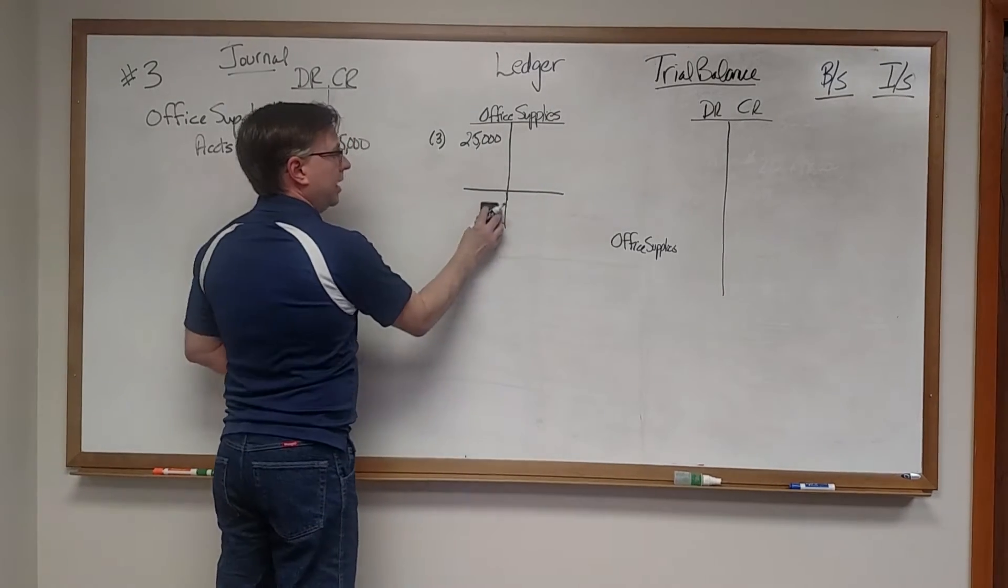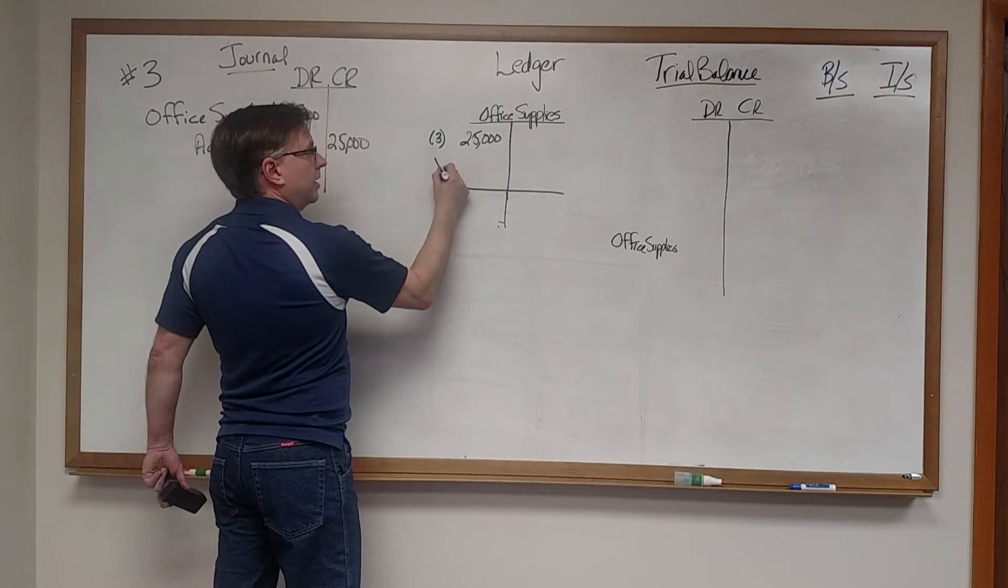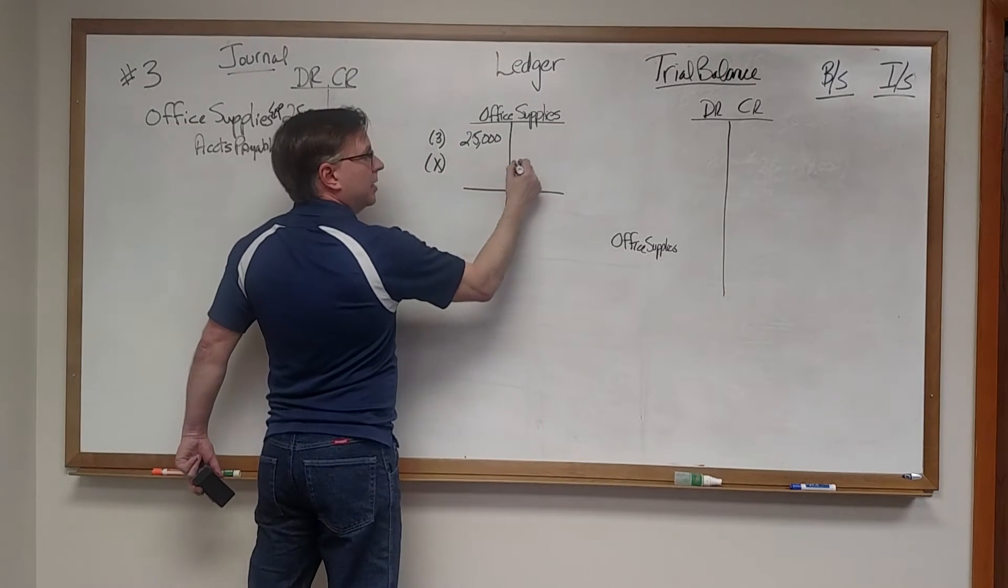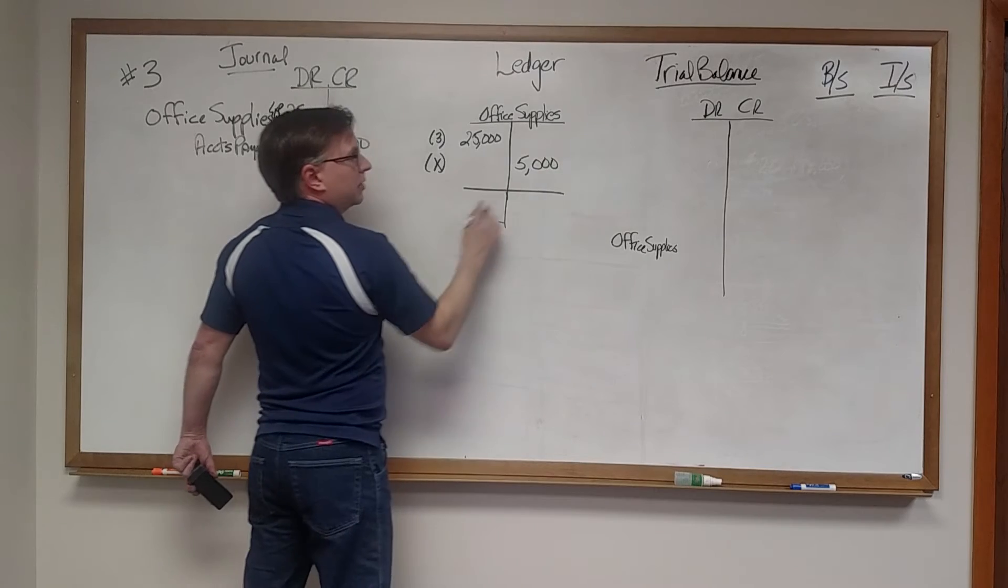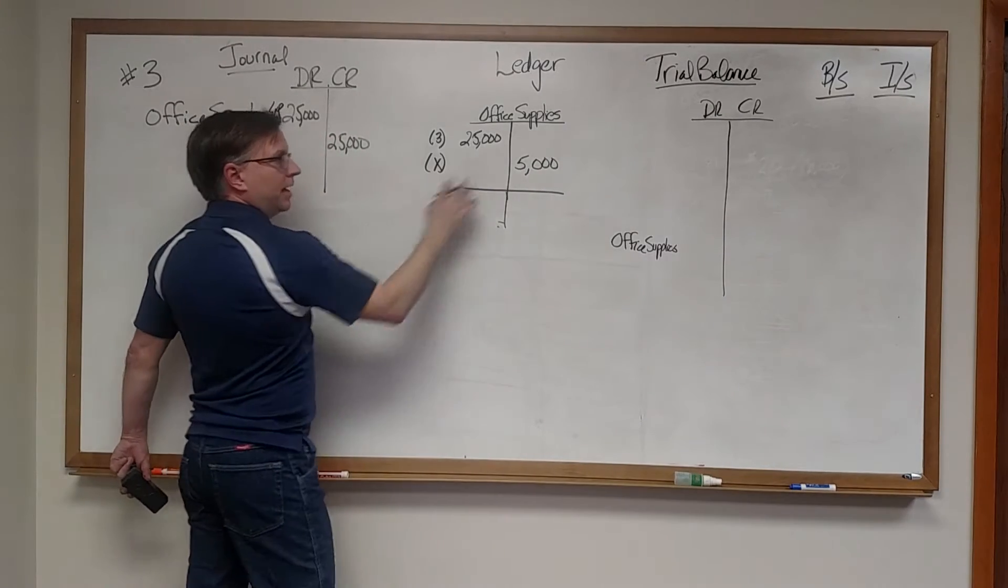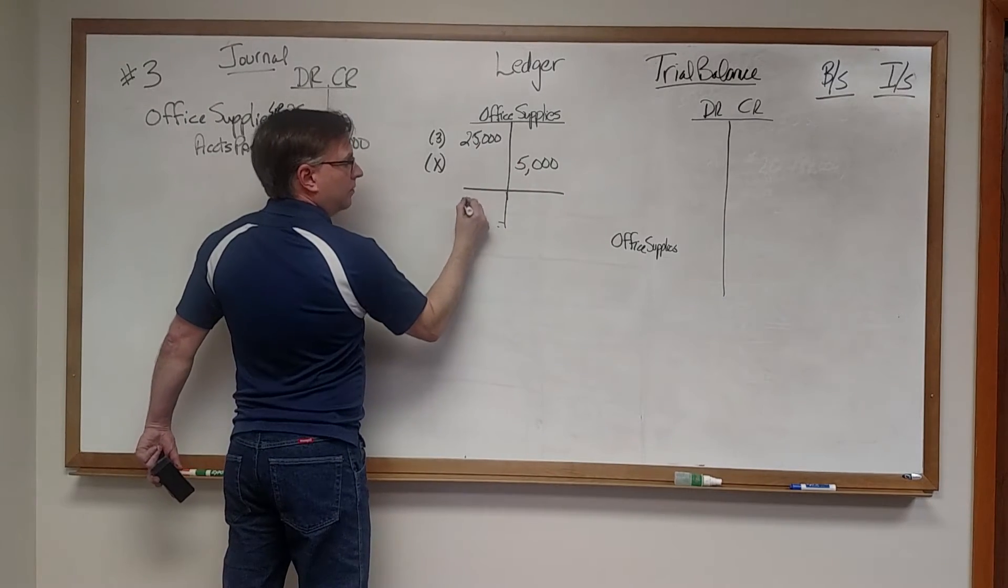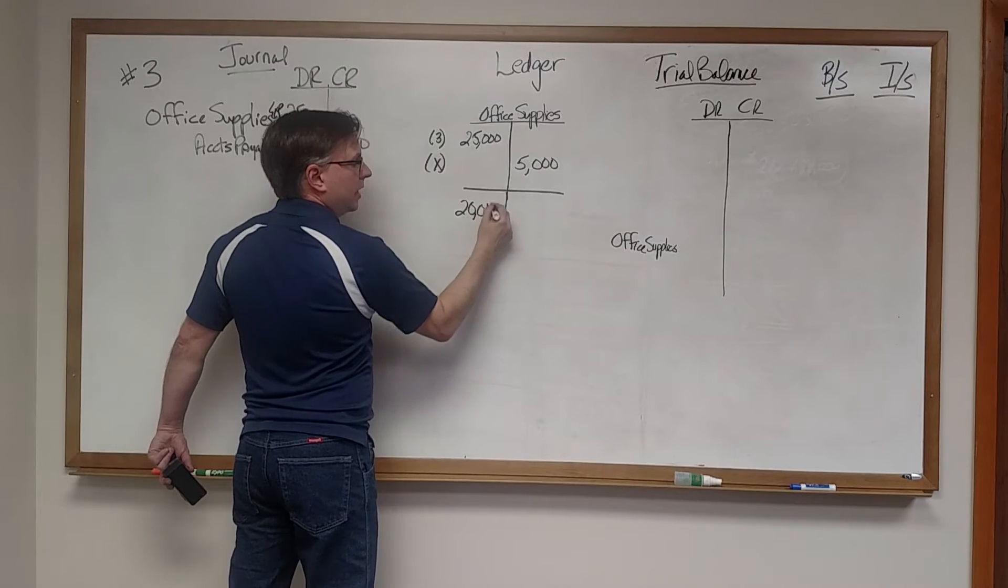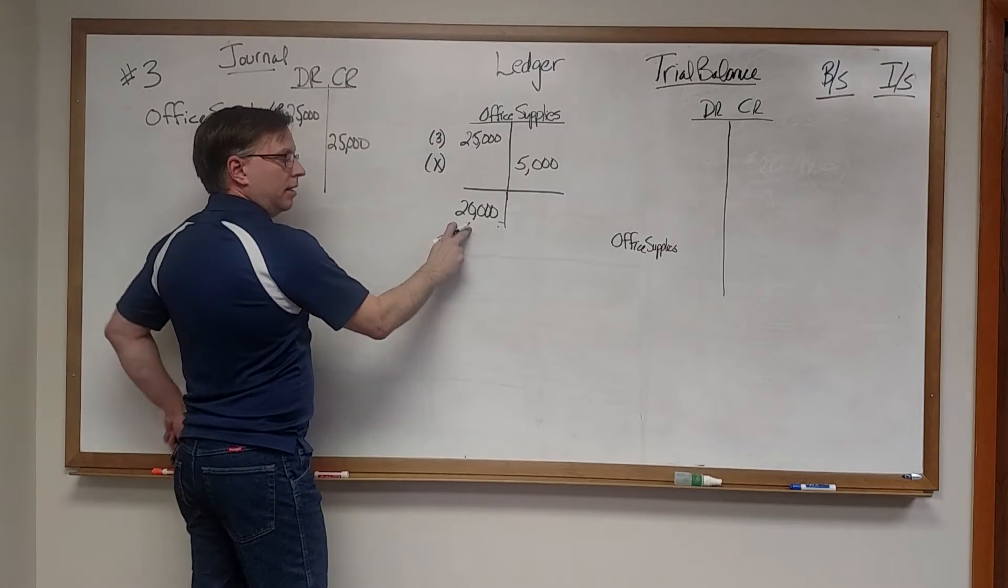Just a quick example again. If for some reason we had another entry out there that may have reduced office supplies through a credit of $5,000, then we would have had a $20,000 balance that would be a debit amount.